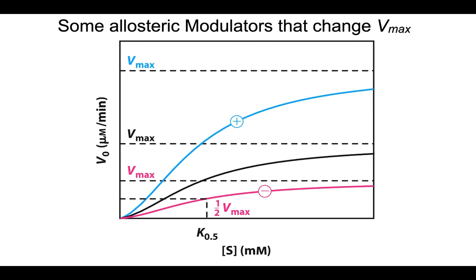Another way heterotropic modulators can act is by changing the Vmax. Here we have our enzyme without any activator or inhibitor, with a certain Vmax. When we add an activator, it raises the Vmax; when we add an inhibitor, it decreases the Vmax. These are examples of allosteric enzymes in which the modulators change the Vmax.